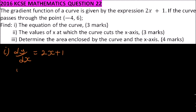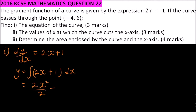So it means to get y, you integrate 2x plus 1 with respect to x, which gives 2 times x squared divided by 2, plus x, plus c. You can simplify to get y equals x squared plus x plus c.